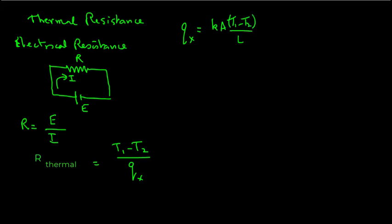So I can rearrange the terms here to move the T1 minus T2, keep that on one side and move all the other terms to the other side. So we will have T1 minus T2 equals QXL divided by KA.